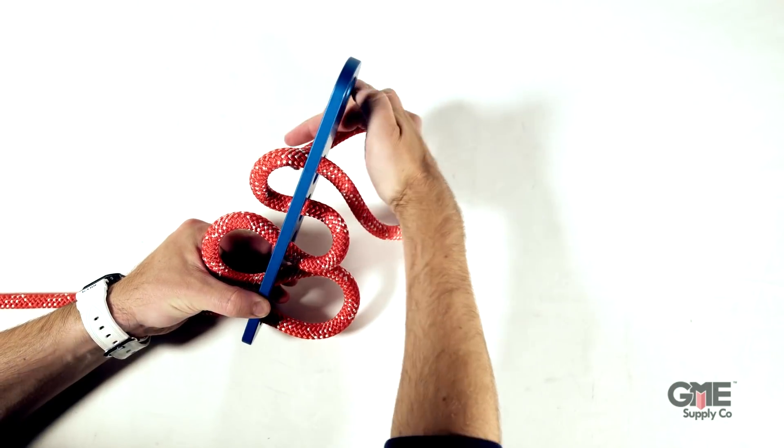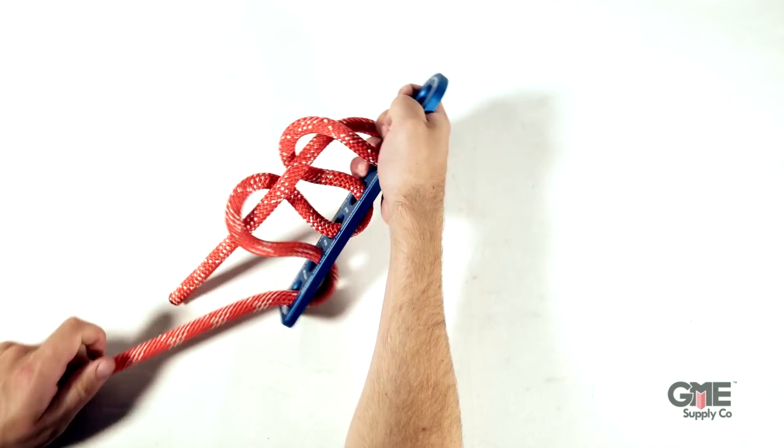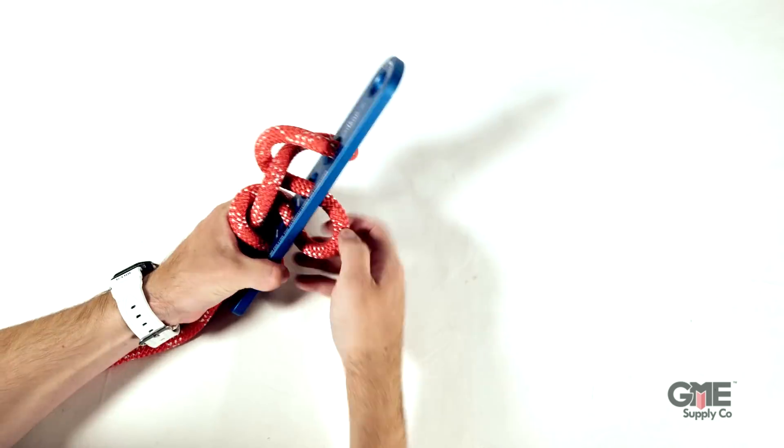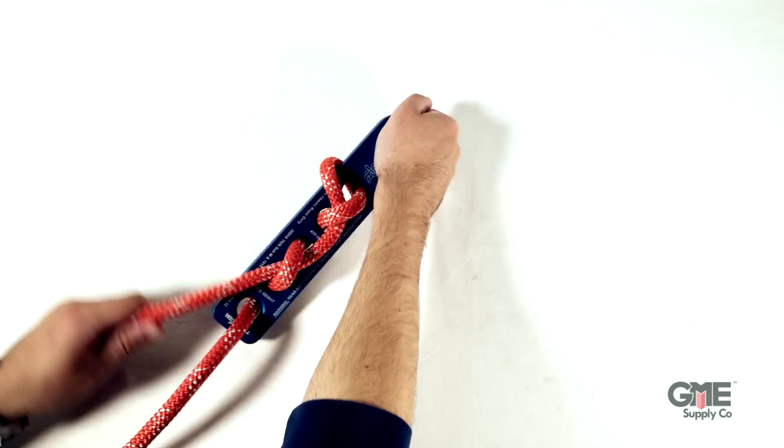Now wrap the rope back around the plate and feed it through the loop between holes four and five. On the same side of the plate feed the rope through the loop between holes two and three. And finally tighten all the loops so that there's no slack and make sure there's at least a hand's length of rope remaining.